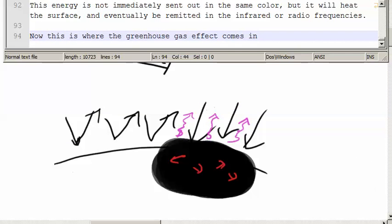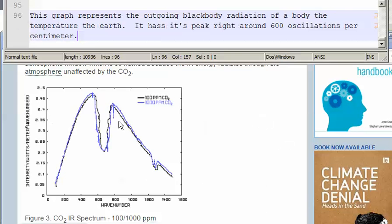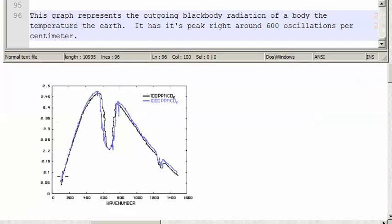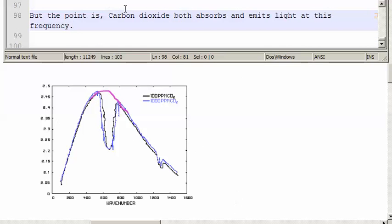Now, this is where the greenhouse gas effect comes in. That light from the ground has a particular color. And whereas these carbon dioxide molecules up here were transparent to the visible light coming in, when they see that infrared light coming out, they grab it. This graph represents the outgoing black body radiation of a body the temperature of the Earth. It has its peak somewhere around 600 per oscillations per centimeter.